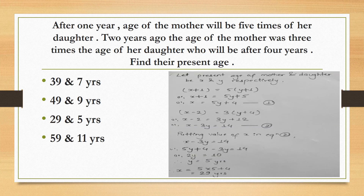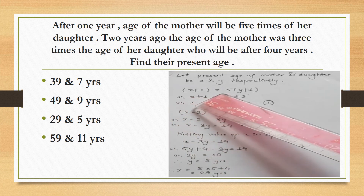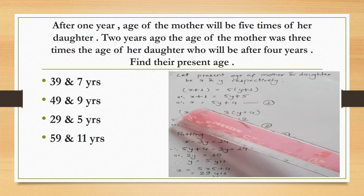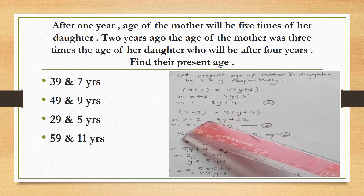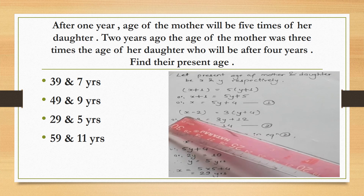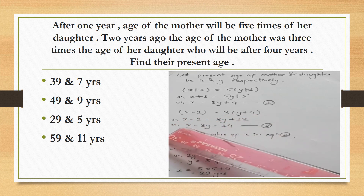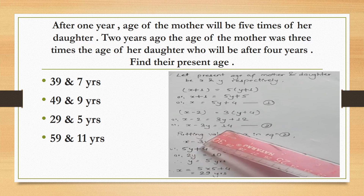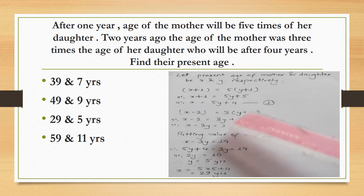After 1 year, the age of the mother will be 5 times that of her daughter. 2 years ago, the age of the mother was 3 times the age of the daughter after 4 years. Find their present ages. Let mother's age be x and daughter's age be y. The first situation: x plus 1 equals 5 times (y plus 1), so x equals 5y plus 4. The second situation: x minus 2 equals 3 times (y plus 4), so x minus 3y equals 14. Solving, y is 5 years and x is 29 years.